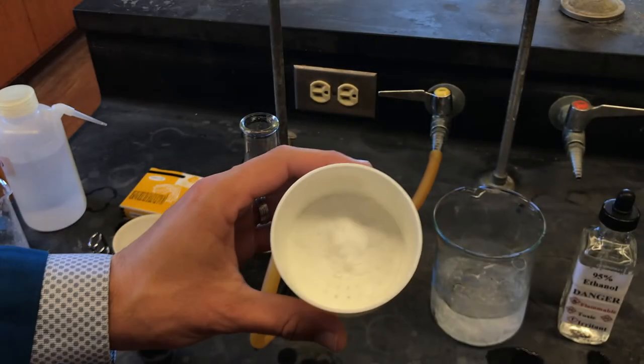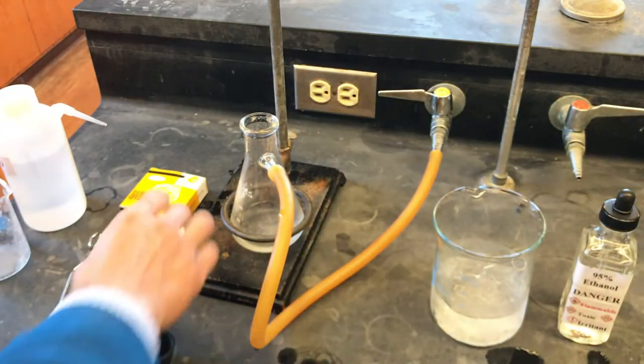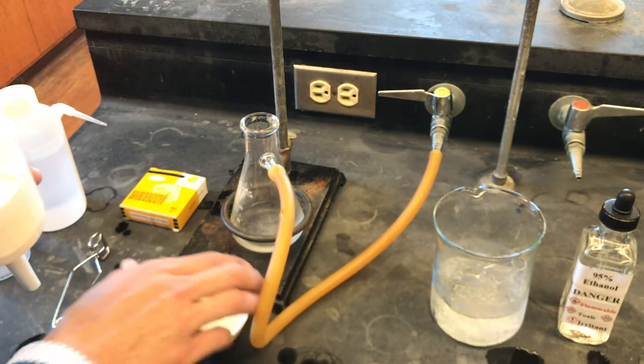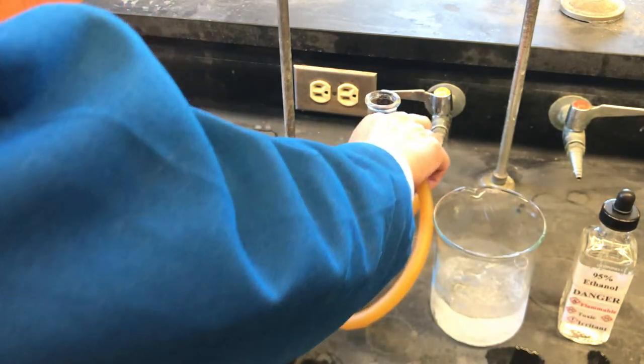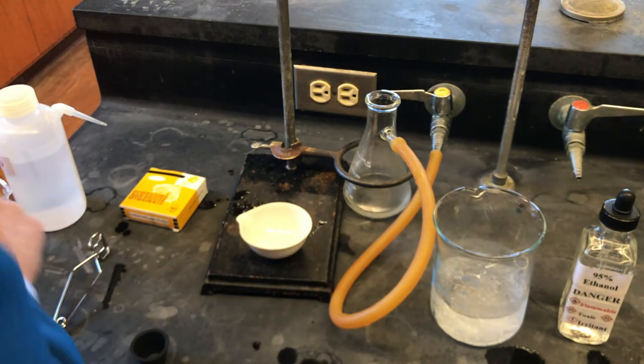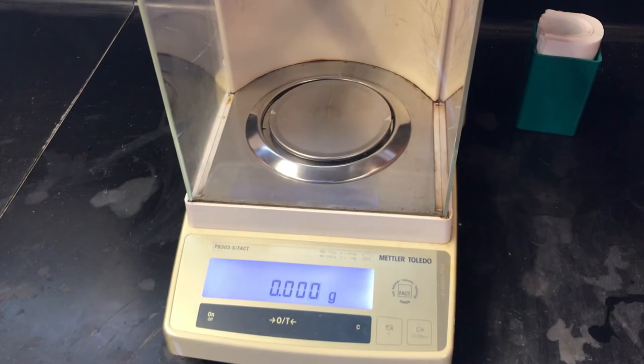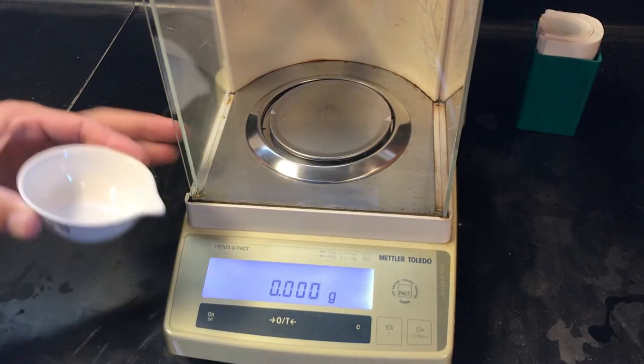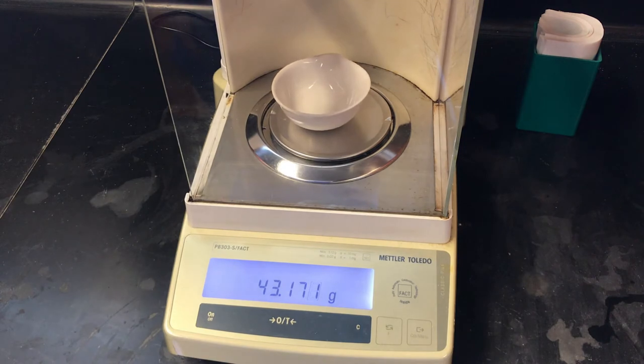You can see our solid isolated potassium alum on our filter paper. However, this product is wet and needs to be dried before a yield can be determined. We will now transfer our wet alum product to a clean dry evaporating dish. But before we do, we need to get an initial mass of the evaporating dish, which comes out to 43.169 grams.